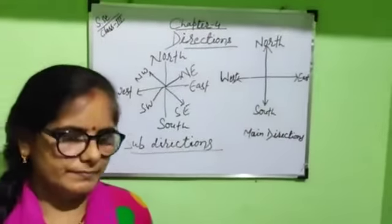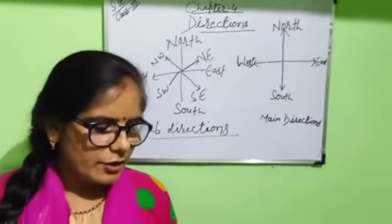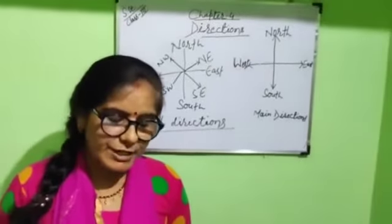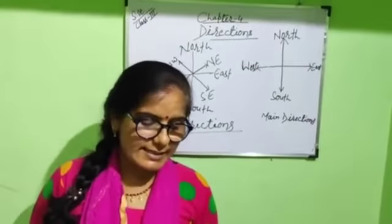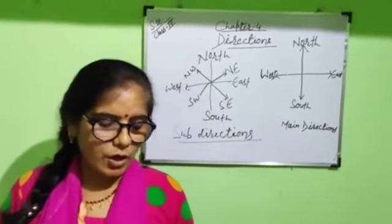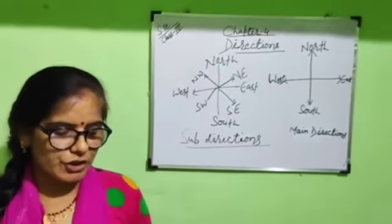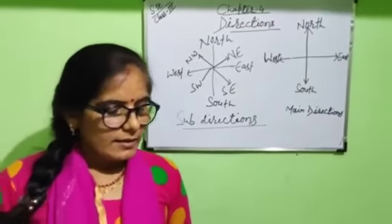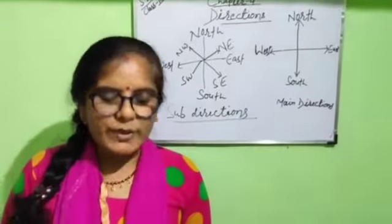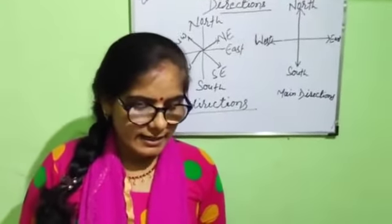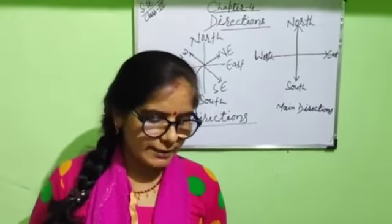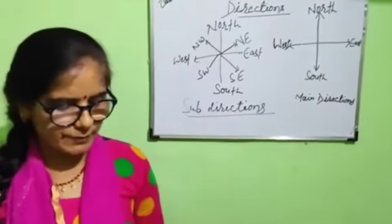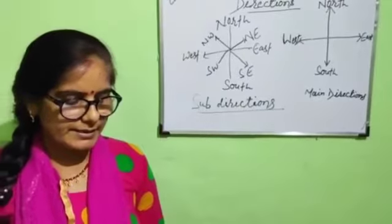Now next topic: knowledge of directions. Knowledge of directions is very important for us. It helps us to locate or know the position of a person, place or thing. Suppose you are standing at a crossing and you want to go to the post office — you need to know the direction of the post office from that place.